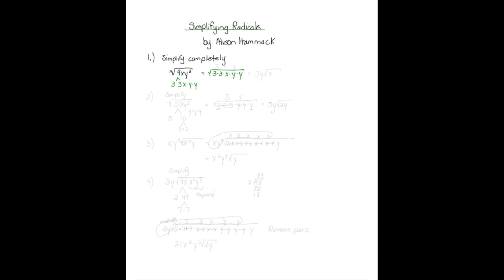Now we're going to cross out the pairs, because for every pair underneath the square root sign or radical sign, one of the pairs comes out of the radical. So three and three — the three comes out. X only has himself, so we leave him under there. Y — for every pair, one comes out. So the things on the outside get multiplied together, and we're left with three times y, with square root of x as the only thing left under the radical.